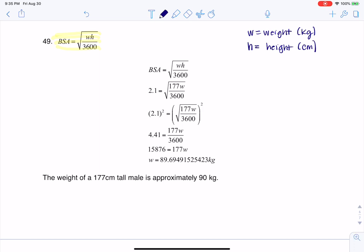And if we look at the setup for number 49, they told us that we had a male who was 177 centimeters tall. So that's going to be my h value and whose BSA was 2.1. And that's body surface area. So these are the constraints that I was given here.